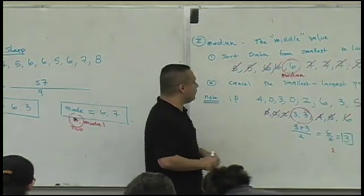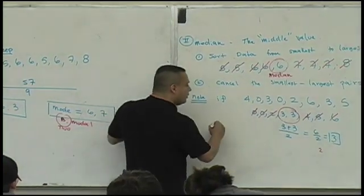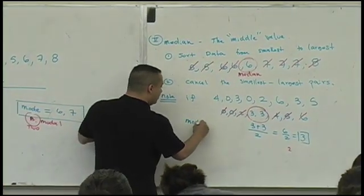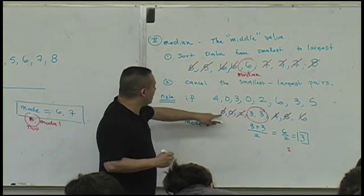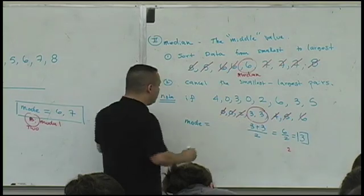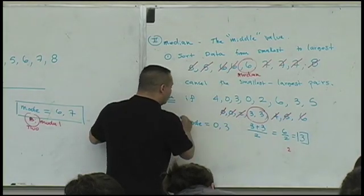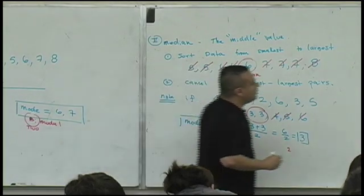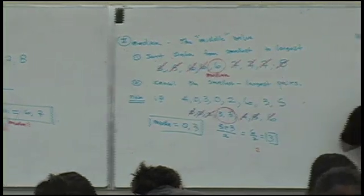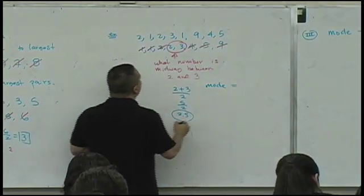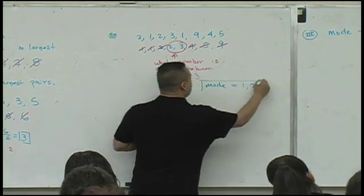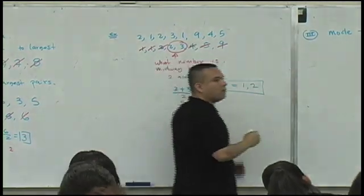What about this example here? What's the mode here? Can you tell me what the mode is for this data set? Zero and what? Three. Another bimodal data set. What's the mode over here for this? What is it? One and two. Oh, all of these are bimodal.